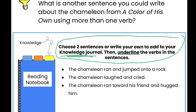Here are your three sentences to choose from. One: The chameleon ran and jumped onto a rock. Two: The chameleon laughed and cried. Three: The chameleon ran toward his friend and hugged him. You can write all three if you'd like, but your task is to write at least two sentences. Make sure you're underlining the verb or verbs in the sentences.